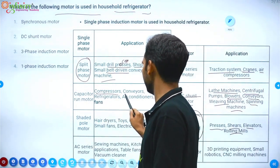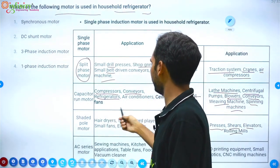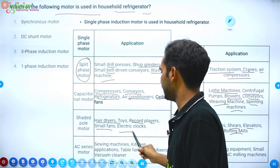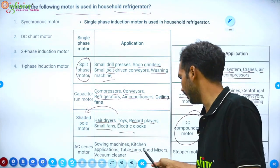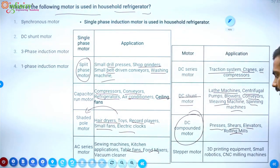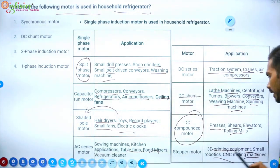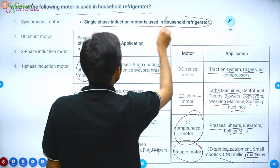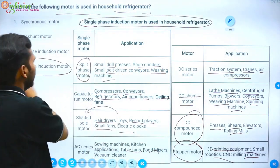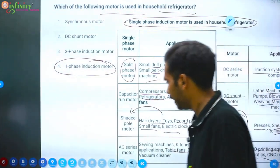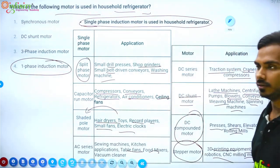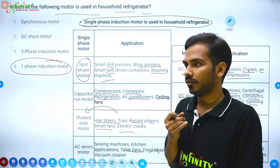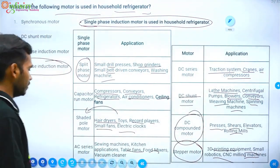Compressors, conveyors, refrigerators, air conditioners, and ceiling fans use capacitor-start motors. Hair dryers, toys, record players, and small fans use shaded pole motors. AC series motors are used for table fans, food mixers, vacuum cleaners, 3D printing equipment, small robotics, and CNC machining. So for a household refrigerator, a single-phase induction motor is the answer. I hope the method of explanation is clear — how to decode the question and the answer.